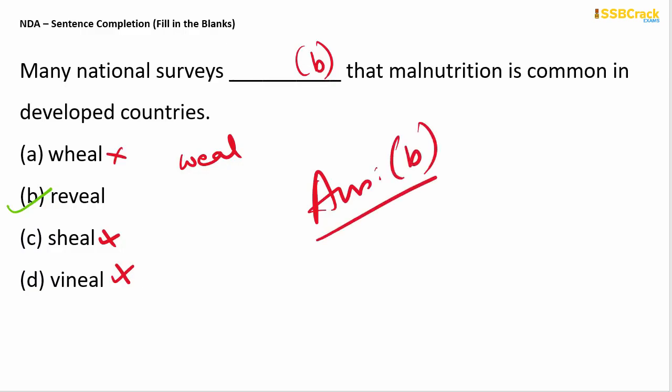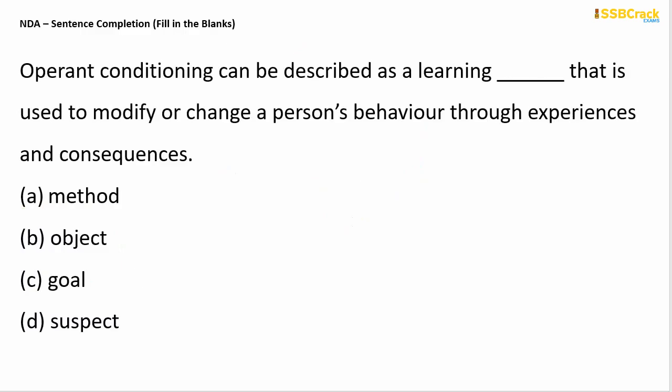Next question: 'Operant conditioning can be described as a learning ___ that is used to modify or change a person's behavior through experiences and consequences.' The blank calls for 'process' — in other words, a learning method. So your answer is option A.